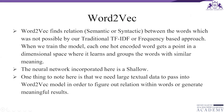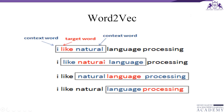Word2Vec tries to find a relation — it could be a semantic relation or a syntactic relation — between words, which was not possible with traditional TF-IDF or frequency-based approaches. When we train this model, each one-hot encoded word gets a point in a dimensional space where it learns and groups words with similar meanings. We need large textual data to generate meaningful results.